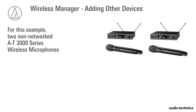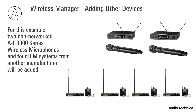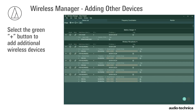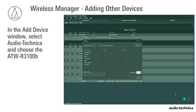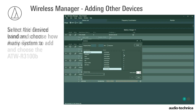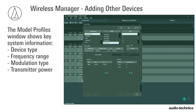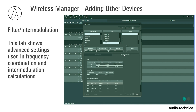For this example, two non-networked AT3000 series wireless and four IEM systems from another manufacturer will be added. Select the green plus button to add wireless devices. When the Add Device window opens, select Audio-Technica and choose the ATW-R3100B. Select the desired band and choose how many systems to add. Profile shows key information about the system including device type, frequency range, modulation type, and transmitter power. The Filter Intermodulation tab shows advanced settings used in frequency coordination and intermodulation calculations.